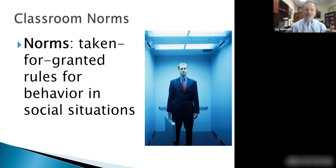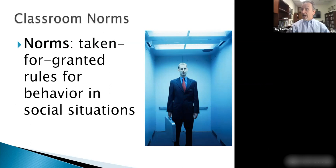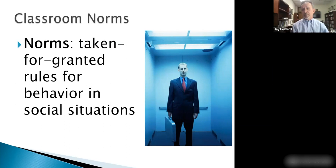Give me an example of a social norm for riding on an elevator. Don't push all the buttons. Stand facing the door — just imagine you're waiting for the elevator, the door opens, and there I am facing the back. You might not get on. When you're by the keypad, you punch for other people. Don't talk — it's awkward. Try not to be too close to the next person. If you're the only person, you can stand anywhere. But as soon as a second person gets on, there's this invisible line drawn in the center.